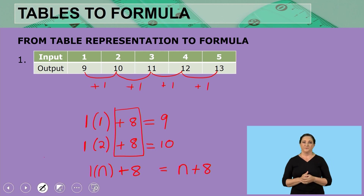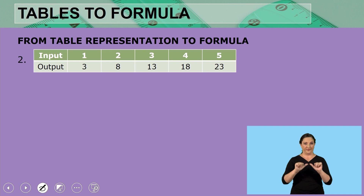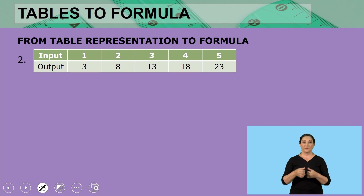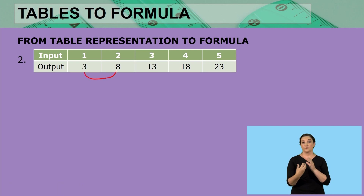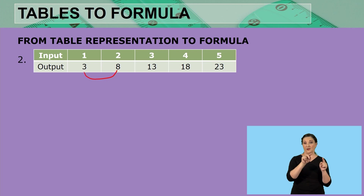That means the formula is simply n plus 8 — that is our formula for these output values. Let's move to the next one. The output values there are 3, 8, 13, 18, and 23.